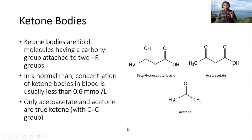Ketone bodies are lipid molecules having a carbonyl group attached to two R groups. In a normal person, the concentration of ketone bodies in blood is usually less than 0.6 mmol per liter.